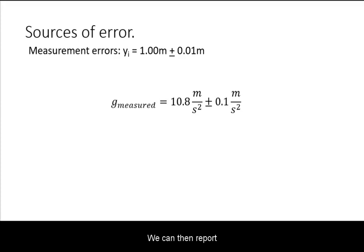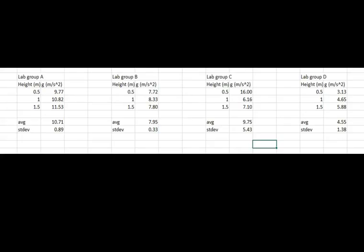Let's plug this in to our calculations for G. We can then report that the uncertainty of our G measurements is plus or minus 0.0 meters per second squared. That is only due to this error. If you compare this to the standard deviation of the measurements of every group, it seems that this is not likely to be a significant source of error for most of them.